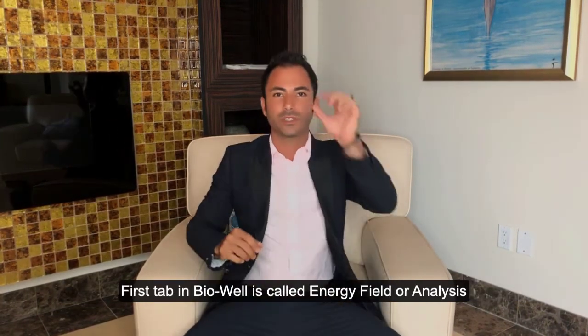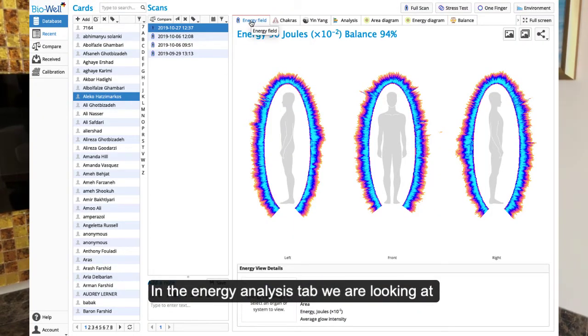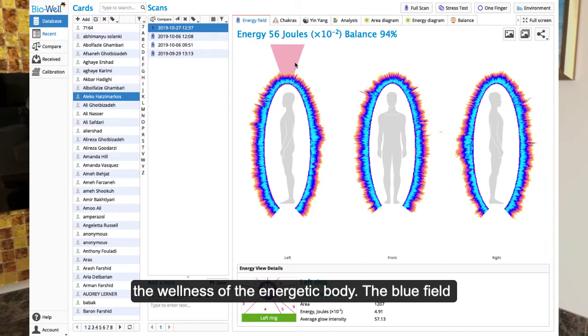The first tab in BioWell is called energy analysis. In the energy analysis tab, we're looking at the wellness of the energetic body.